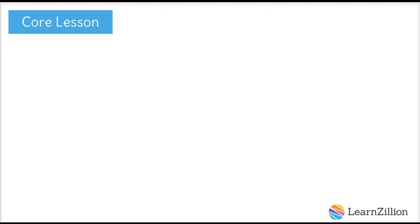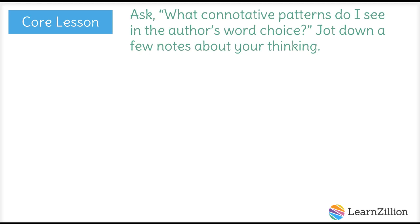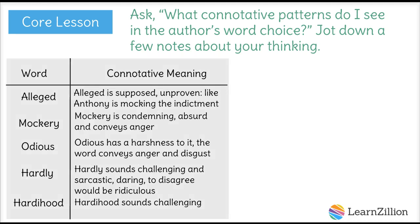Finally, the last step. Ask: What connotative patterns do I see in the author's word choice? Jot down a few notes about your thinking. I am going to start by reviewing my chart, thinking about what tone Anthony established with her word choice. One feeling I get when I read over the list is that Anthony is mocking those that disagree with her. First, she uses the word alleged, indicating the crime did not happen. In addition, she indicates these laws are absurd and ridiculous, almost mocking those who support them. I am going to jot these ideas down.